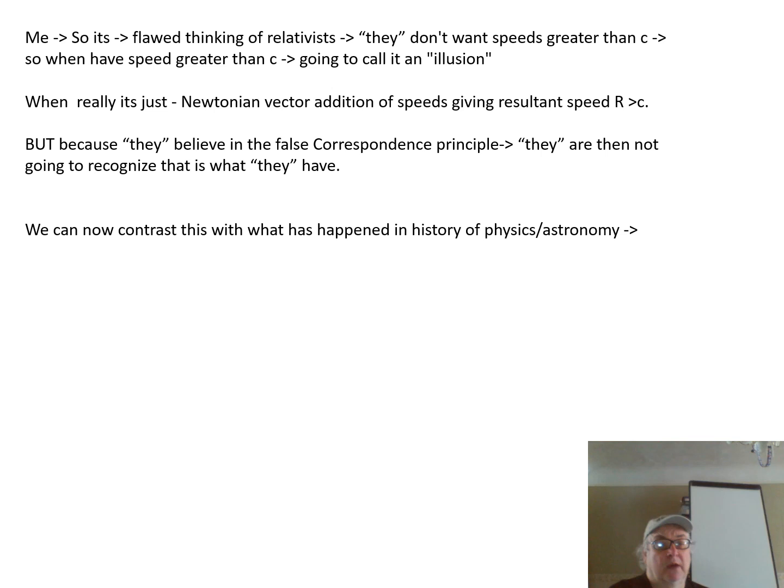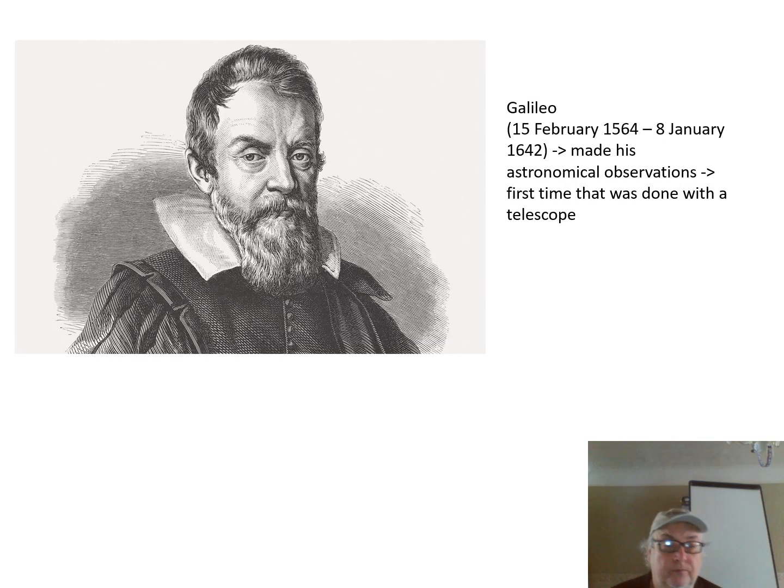So back to the conclusion of my first video. So what we have is a flawed thinking of the relativists. They don't want speeds greater than c, so when they have a speed greater than c, they're just going to call it an illusion. What it really is is the Newtonian vector addition of speeds giving resultant speed R greater than c. But because they believe in the false correspondence principle, they're not going to recognize that is what they have. We can now contrast that with what has happened in the history of physics and astronomy.